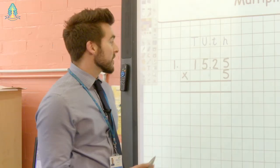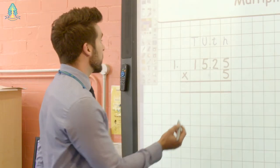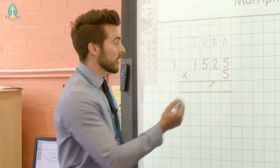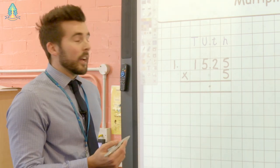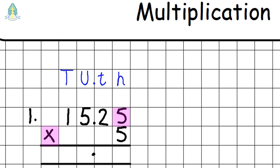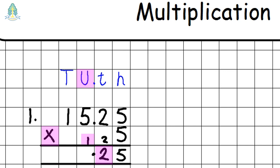Let's now look at a multiplication example. As with the previous examples, we want to put our decimal point in first to avoid any confusion. We now look at the far right column: five multiplied by five gives us twenty-five, which is twenty-five hundredths. The five goes into the hundredths column and we carry our two into our tens column. Moving over, five multiplied by two is ten; add our two we carried over is twelve. Our two goes into the column and we carry our one to the units column.